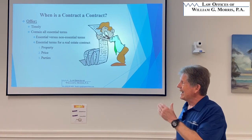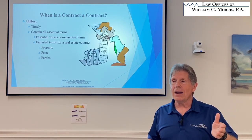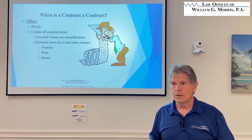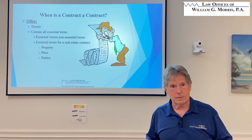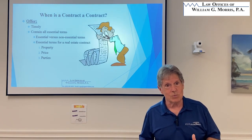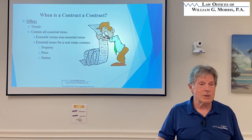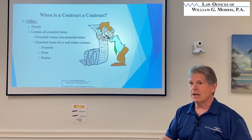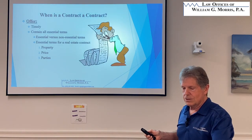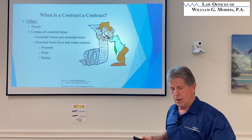If terms aren't in the contract, there are issues. A good example: common law says the buyer assumes the risk of damage to the property from the effective date through closing — so if the property burns down, the buyer still has to buy it. The contract forms we use say that risk stays with the seller until closing, which is where everyone believes it should be. Using a form makes a lot of sense, and being familiar with the form you use is also a good idea.